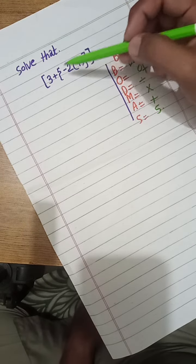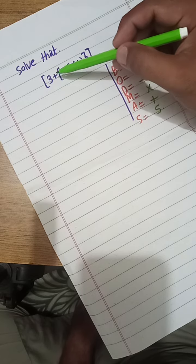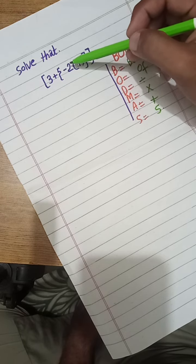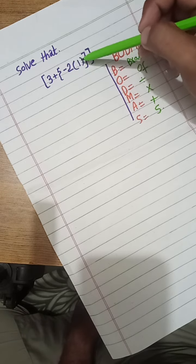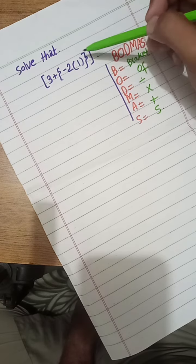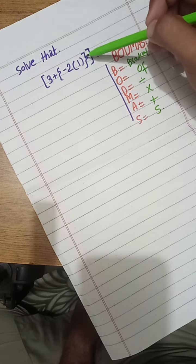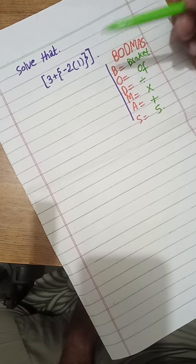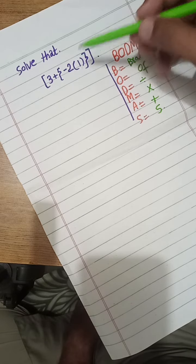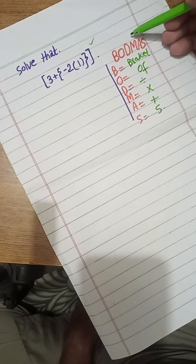Bismillahirrahmanirrahim. We have to solve that: square bracket 3 plus curly bracket minus 2 into curve bracket 1, curve bracket close, curly bracket close, and square bracket close. We have to solve that problem.